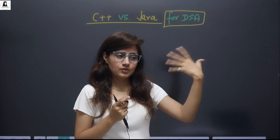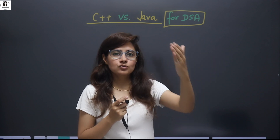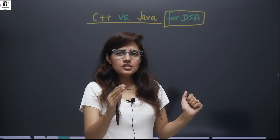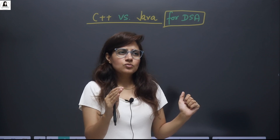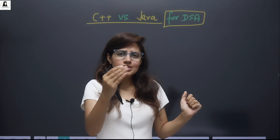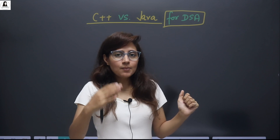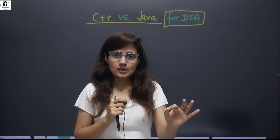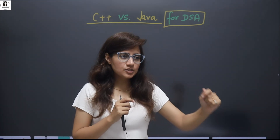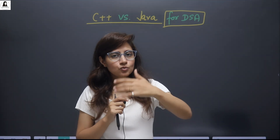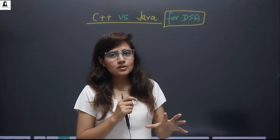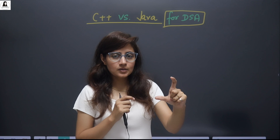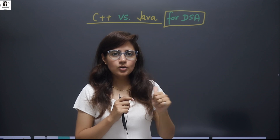In those top tech companies — if you want to go to Google, Microsoft, Amazon, Meta — it's not just about coding in one language like C++ or Java. It's about problem solving skills. They just want to check your problem solving skill. You can write code in C++, Java, or Python. If your code is good and optimized, and you are able to approach that problem properly in an optimized manner, you are good.